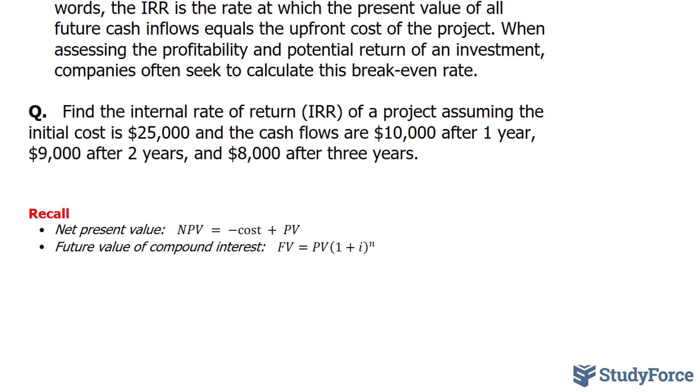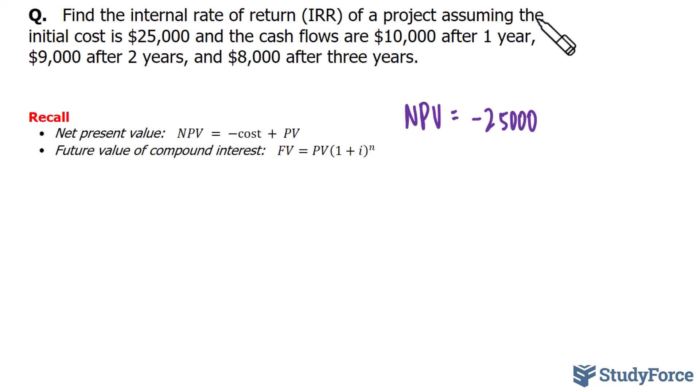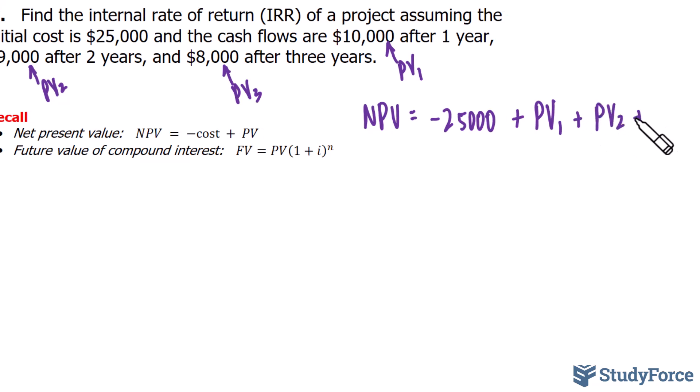In a previous video, we looked at the net present value formula and we learned that it is equal to the cost negated plus the present value of all future cash inflows. So for us, we can denote it as NPV equals negative $25,000, that's the upfront cost, plus the present value of the first future cash flow, the present value of $10,000, I'll call it PV1, plus the present value of the incoming $9,000 two years from today, we'll call this PV2, and the present value of this amount coming at the end of year three.